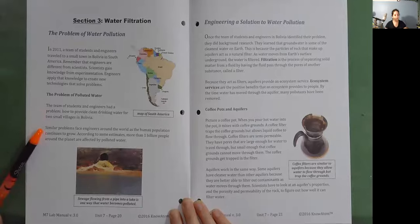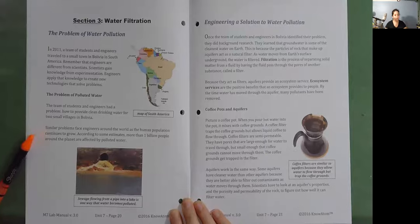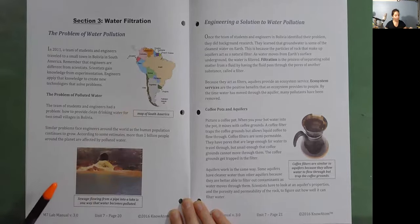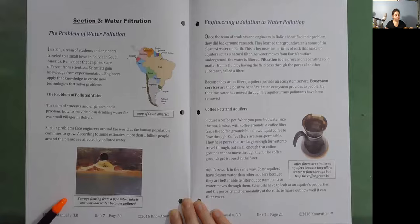This is a map of South America. And here's a picture of sewage flowing from a pipe into a lake. It's one way that water becomes polluted.